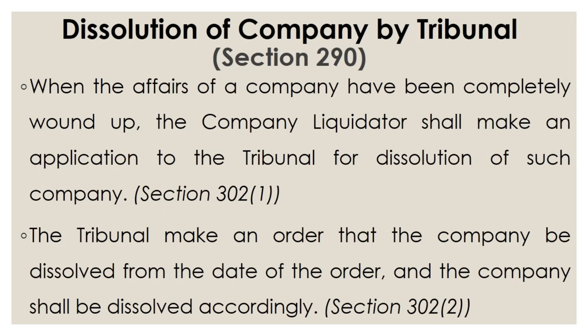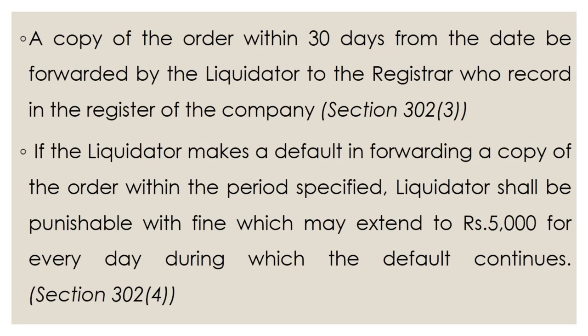The tribunal makes an order that the company be dissolved from the date of the order, and the company shall be dissolved accordingly after receiving the application from the liquidator. From the date of the order, the company is wound up. A copy of the order must be forwarded by the liquidator to the registrar within 30 days from the date of the order, and the registrar records this in the company's register.